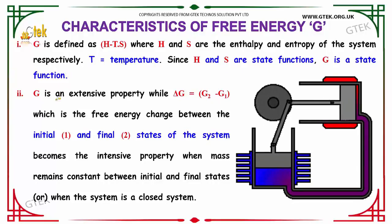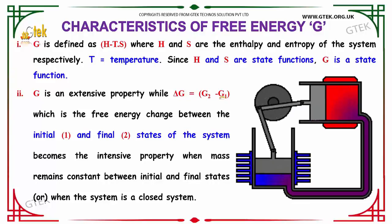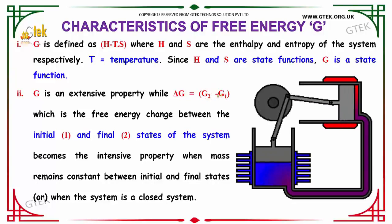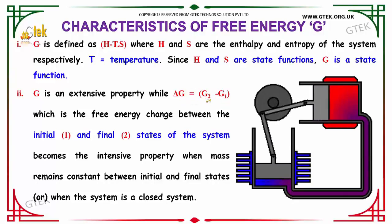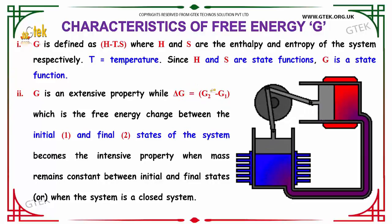G is an extensive property while delta G is equal to G2 minus G1, which is the free energy change between the initial and final states of the system. It becomes the intensive property when mass remains constant and the system is considered as a closed system.